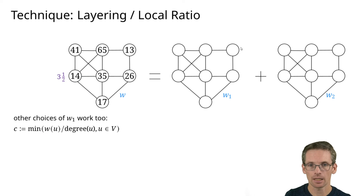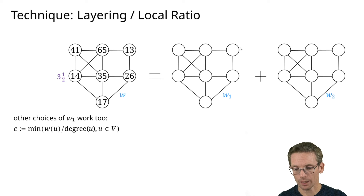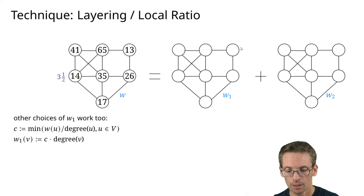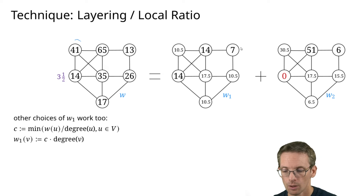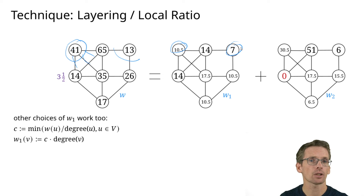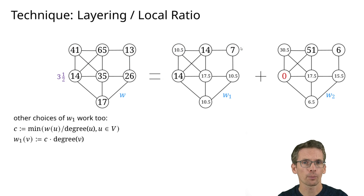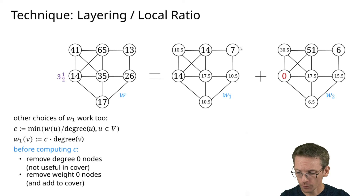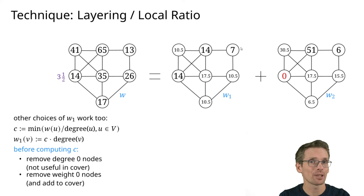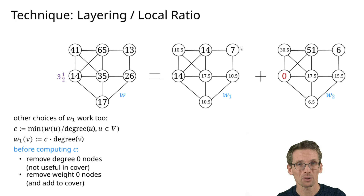We define w1(v) = c · degree(v). For the vertex that defined c, this gives back 14. For a vertex with degree 3, we get 3 × 3.5 = 10.5; for degree 2 we get 7, and so on. We must be slightly careful: if a vertex has degree zero, we remove it (it can't contribute to the cover and would cause division by zero). If a vertex has weight zero, we remove it and add it to the vertex cover since it's free.